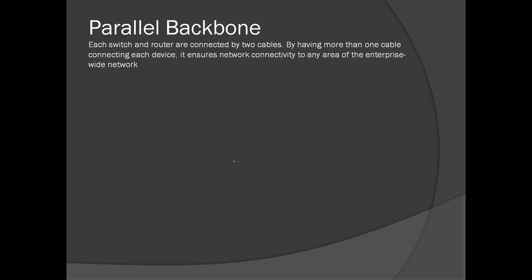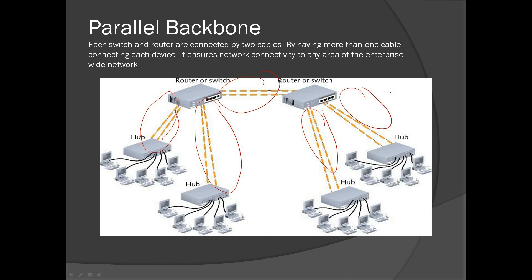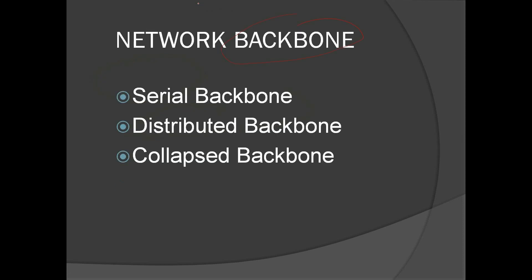The parallel backbone uses redundant cables — each device in the backbone is connected with two parallel cables. The purpose is to have redundancy: if one cable fails, another cable maintains the connectivity. Those are the four types of network backbone: serial backbone, distributed backbone, collapsed backbone, and parallel backbone. That concludes the presentation on network backbone and the different topologies.